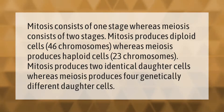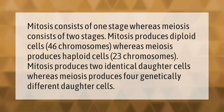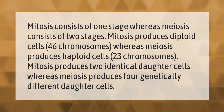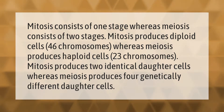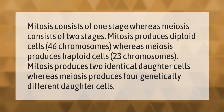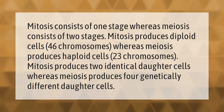Mitosis consists of one stage, whereas meiosis consists of two stages. Mitosis produces diploid cells with 46 chromosomes, whereas meiosis produces haploid cells with 23 chromosomes. Mitosis produces two identical daughter cells, whereas meiosis produces four genetically different daughter cells.